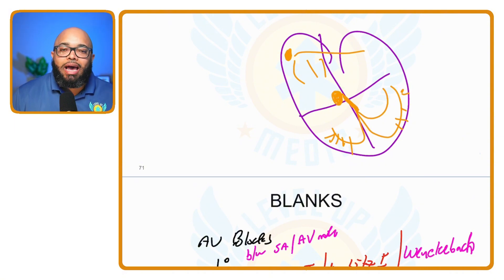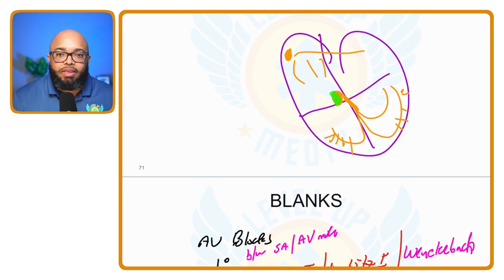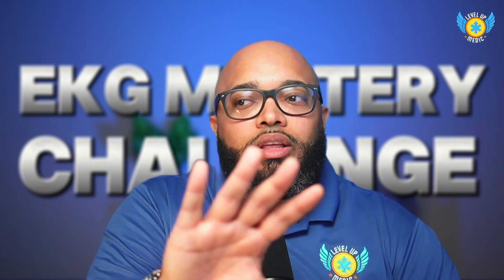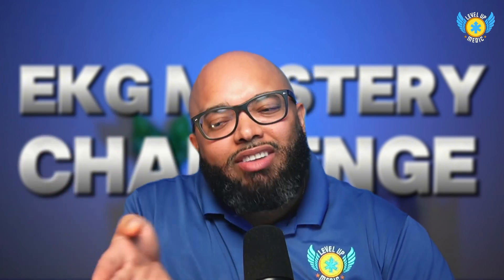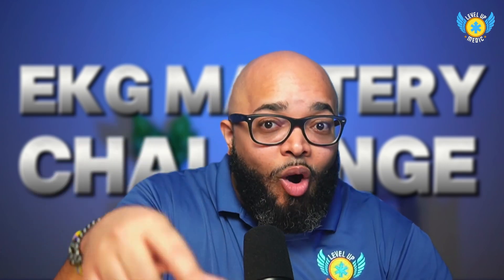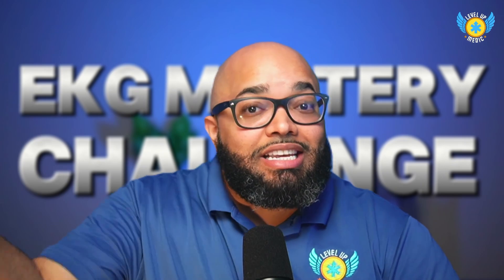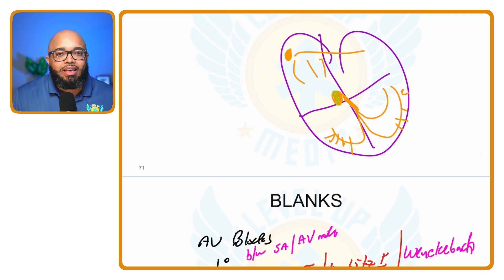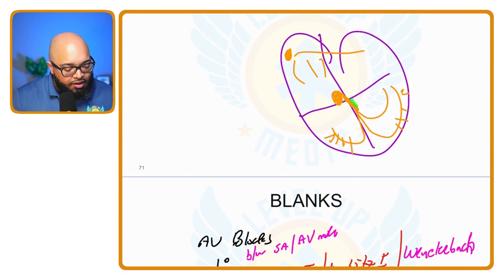Second degree type one, Mobitz I, Wenckebach, is a partial block of the AV node. Some signal still gets through, but it's partially blocked — like taking a detour home because the bridge is out. You still get home, but it takes a little longer. Second degree type one is often a partial block of the AV node.